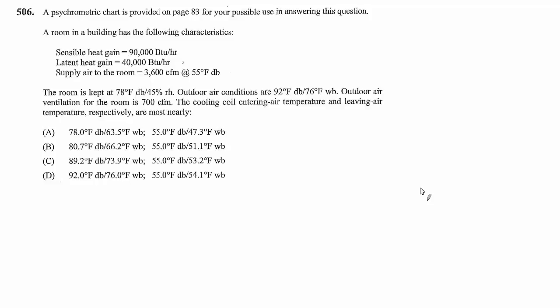A psychrometric chart is provided on page 83 for use in answering this question. A room in a building has the following characteristics: sensible heat gain 90,000 BTU per hour, latent heat gain 40,000 BTU per hour, supply air to the room 3,600 CFM at 55 degrees dry bulb. The room is kept at 78 degrees dry bulb, 45% relative humidity. Outdoor air conditions are 92 degrees dry bulb, 76 wet bulb. Outdoor air ventilation for the room is 700 CFM. The question asks for the cooling coil entering air temperature and leaving air temperature, given in terms of both dry bulb and wet bulb.